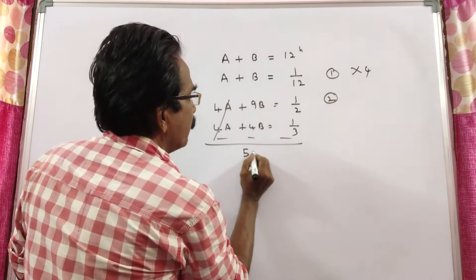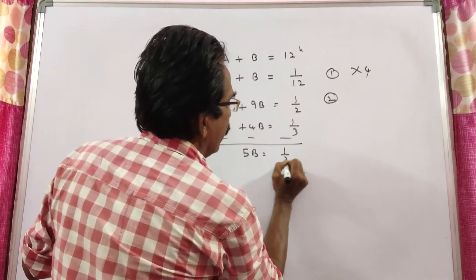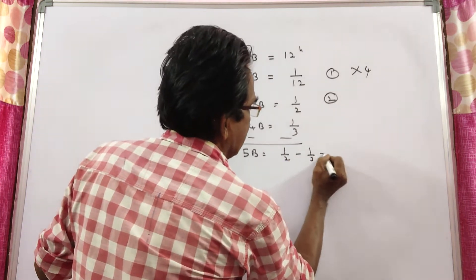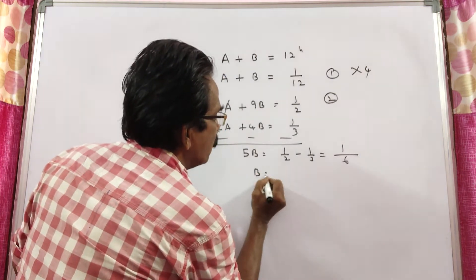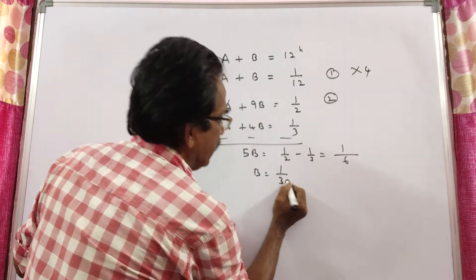5B is equal to 1 by 2 minus 1 by 3. This is equal to 3 minus 2, which is 1 by 6. B is equal to 1 by 30.